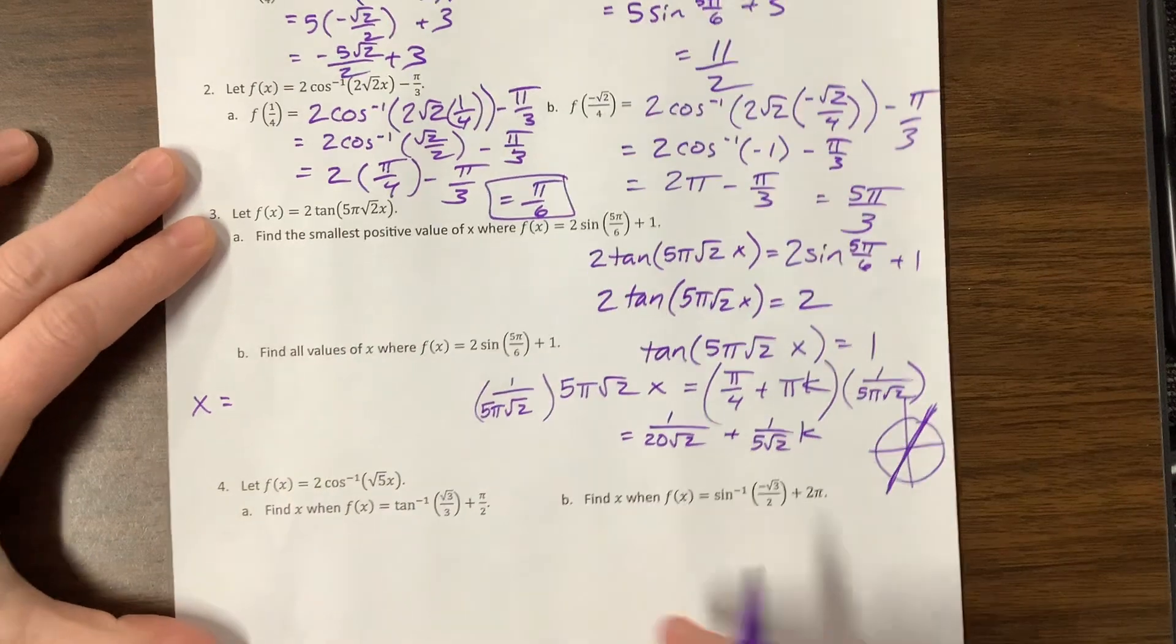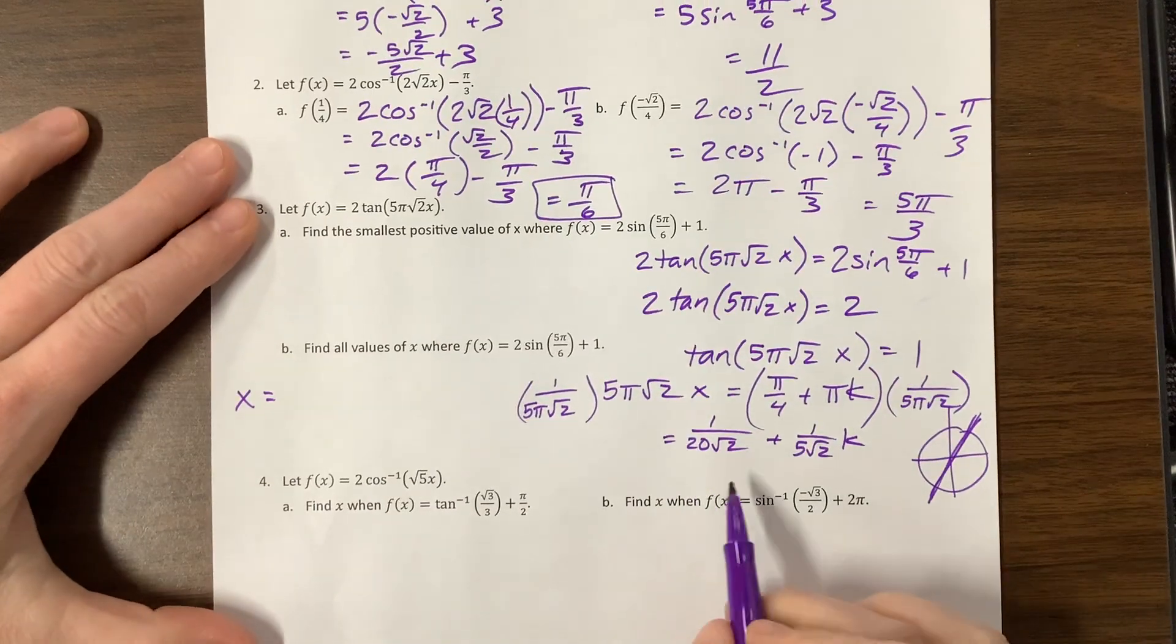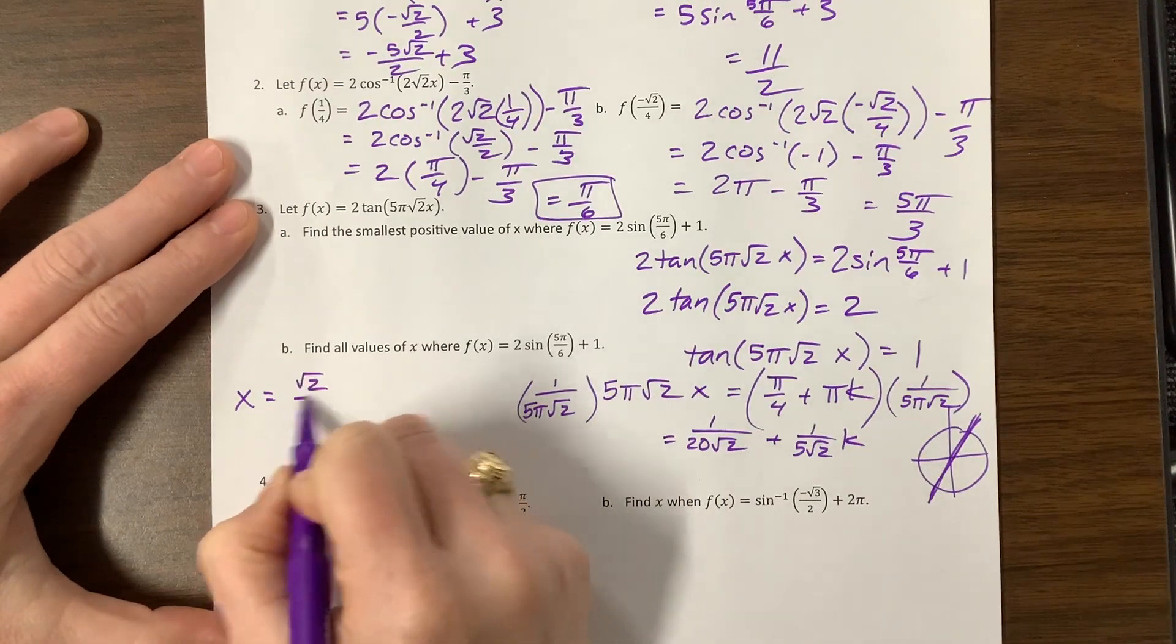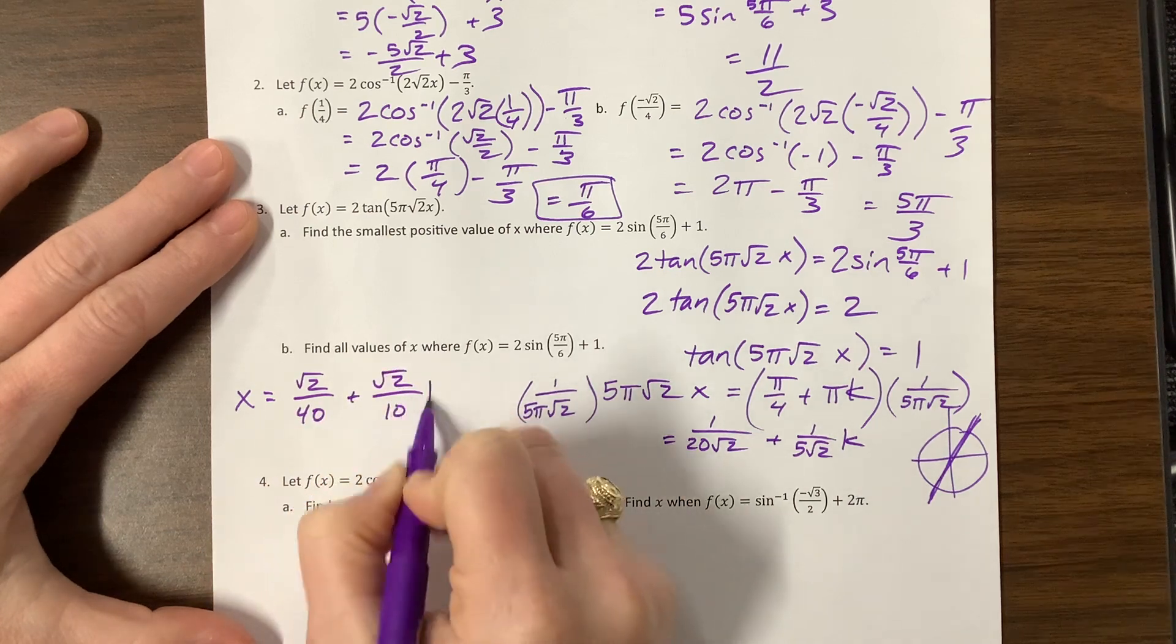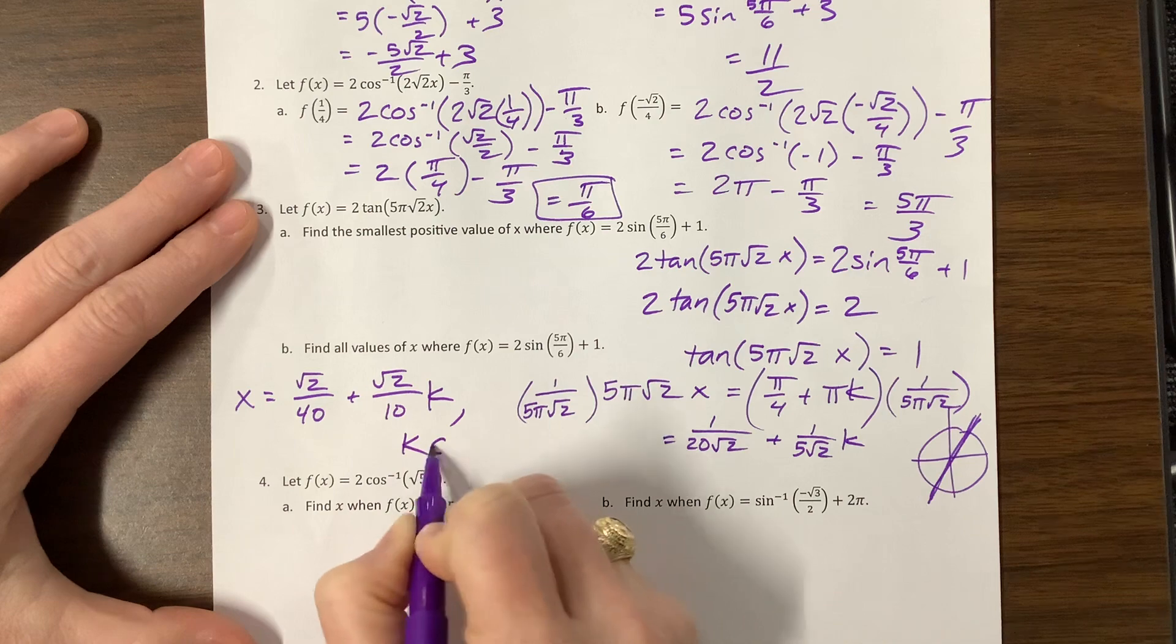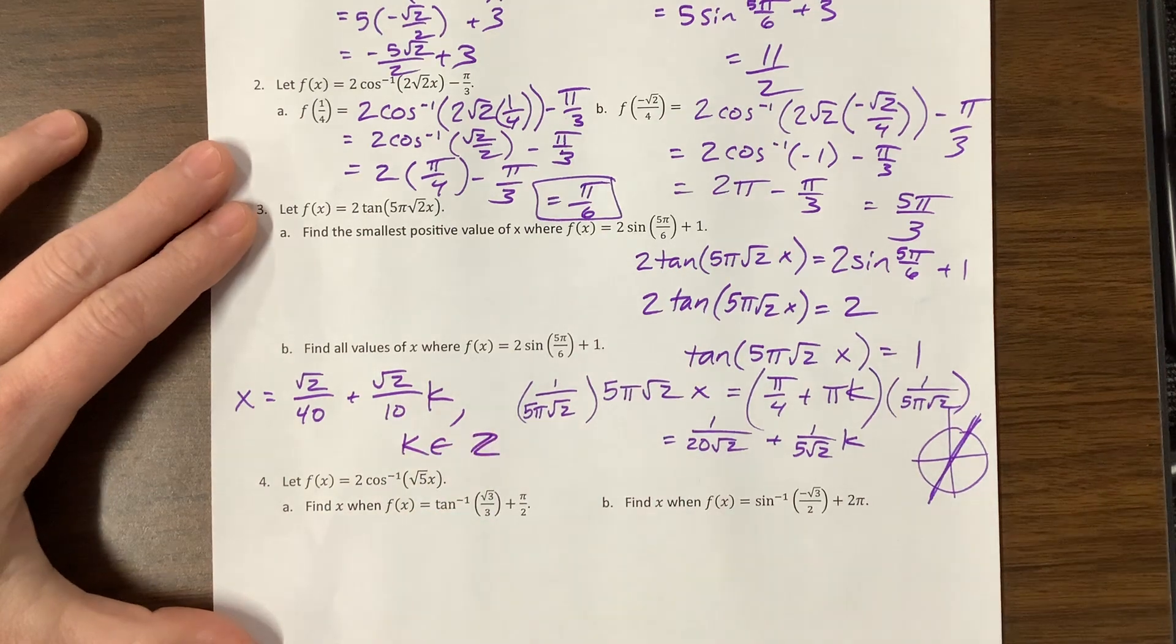Here x would equal √2/40 plus √2/10 times k, where k is an element of the integers.